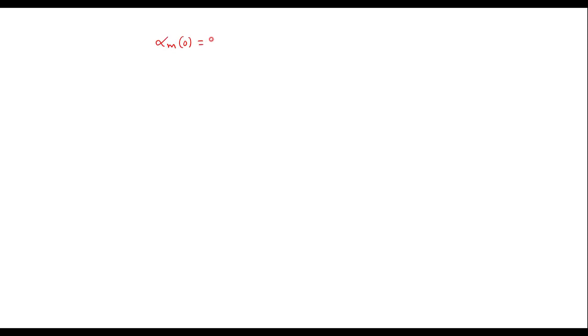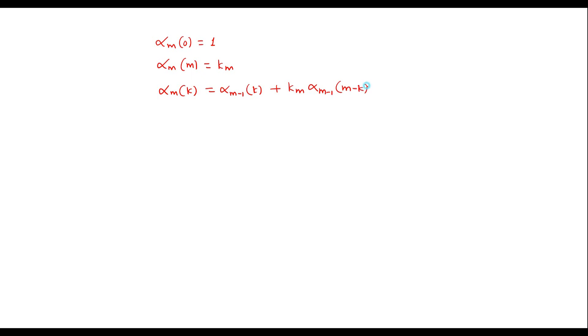The formulas used to convert lattice coefficients into direct form are: (a) α_m(0) equal to 1, (b) α_m(m) equal to k_m, and (c) α_m(k) equal to α_{m-1}(k) plus k_m times α_{m-1}(m minus k). One should remember these three formulas to convert lattice coefficients into direct form coefficients.